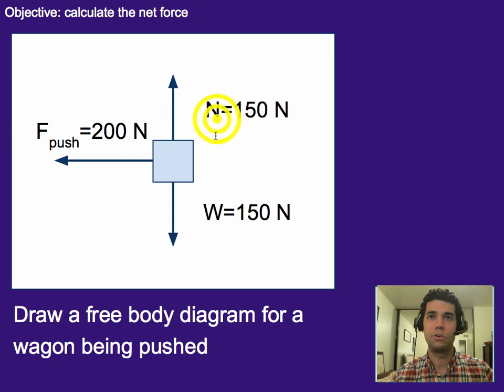So the values were the normal force was 150 and the weight's 150. The normal force is 150 because it has to cancel out the weight. We know it's not moving up or down. The wagon's not sinking. It's not floating. So basically we know in the up and down direction there's basically no overall force.